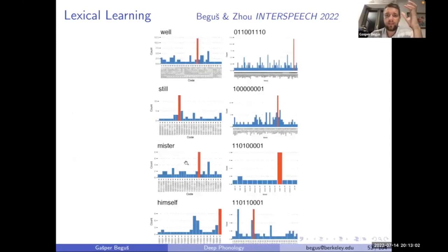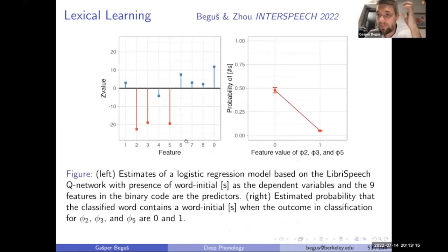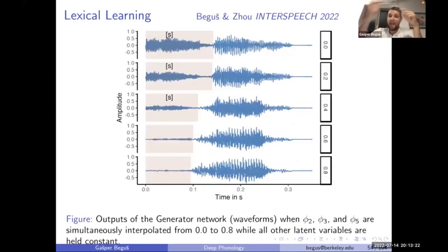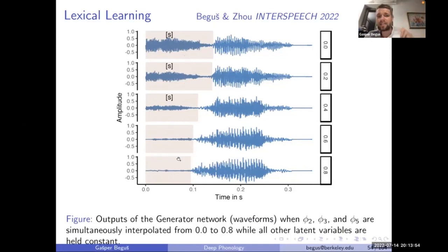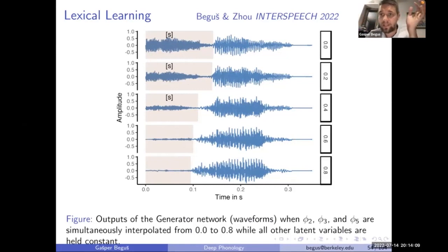We also see evidence in the Q-network that individual codes represent unique lexical items, but there is sublexical structure in the bits: bits two, three, and five encode the presence of word-initial 's', for example. You can test this generatively by taking those three bits and interpolating them from values outside the training range. As you interpolate three bits out of nine from zero to one, 's' gradually appears or disappears from the output, while most of the time nothing else changes — modeling both lexical learning and sublexical representation.